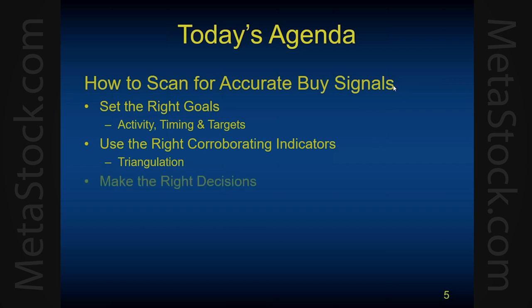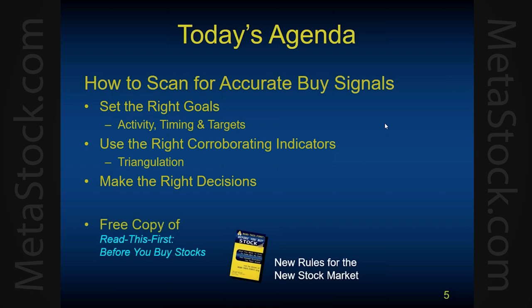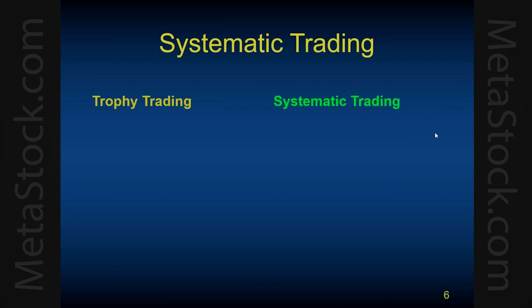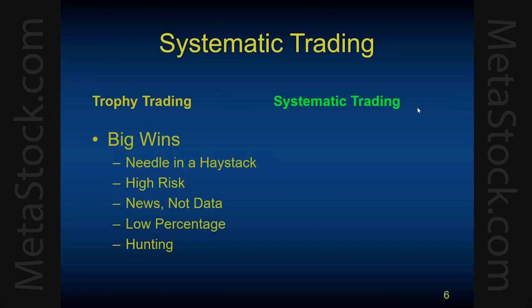On the agenda today, we're talking about how to scan for accurate buy signals in Metastock. We'll cover three sections: first, how to set the right goals in terms of activity, timing, and targets; second, how to use corroborating indicators — what I call triangulation — to improve the accuracy of your buying decisions; and along the way we'll cover a little bit of decision theory. At the end, everyone's welcome to get a free copy of our book, Read This First Before You Buy Stocks, published about two years ago on Kindle and Amazon.